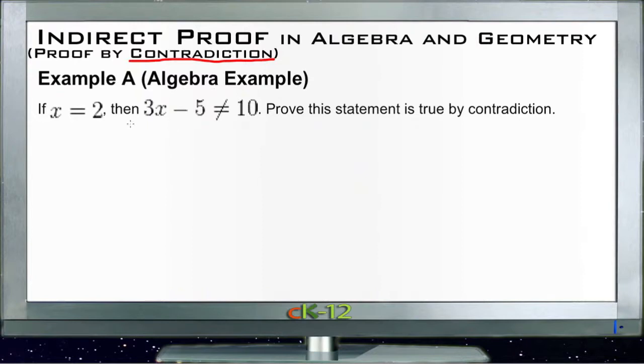So let's take a look at our first one here. Example A says if x equals 2, then 3x minus 5 cannot be 10. We need to prove this statement is true by contradiction. So what we need to do is take our conclusion, our then part over here, and switch it around, assume that the opposite of it is true.